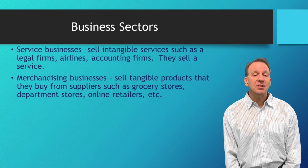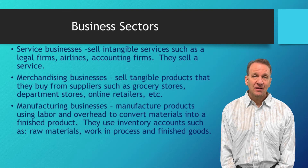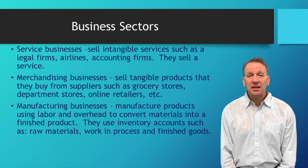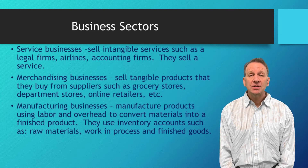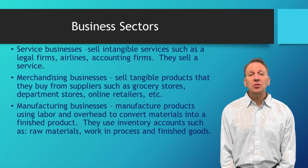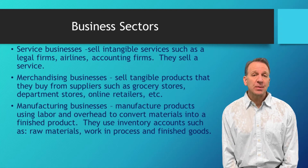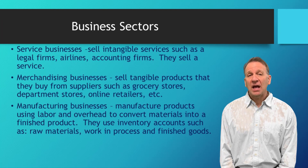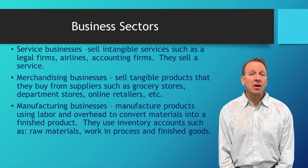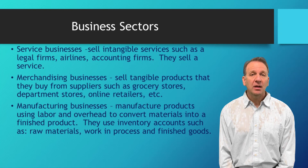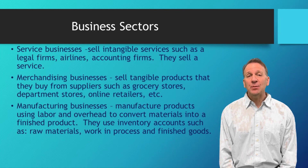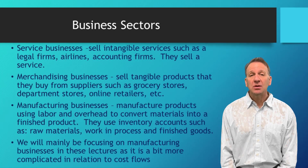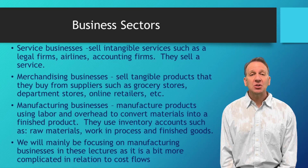The third type is the manufacturing business. They manufacture a product — they buy materials and then use labor and overhead to convert those materials into a product. They also have inventory, but their inventory is made up of three types: raw materials inventory, work in process inventory — sometimes called WIP — and finished goods inventory. So they typically have three different inventory accounts.